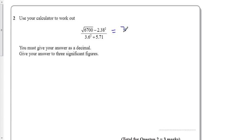If I do the top, just the top bit, the square root of 6700 minus 2.38 squared.